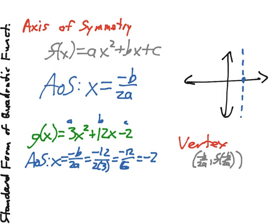So in our function here of g of x, our vertex, we already have the x part of it. Let's find the y, or the output value. What is g of negative 2? That's going to equal 3 times negative 2 squared, plus 12 times negative 2, minus 2.